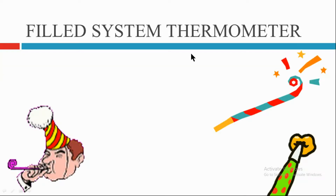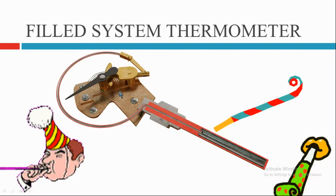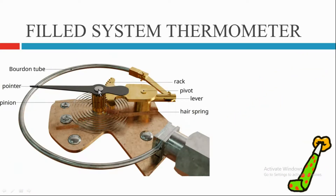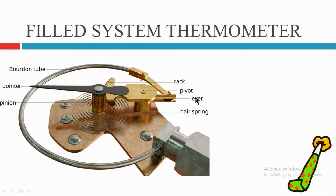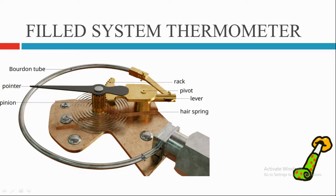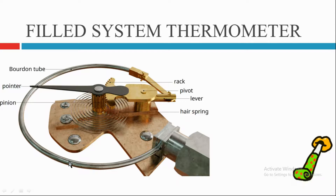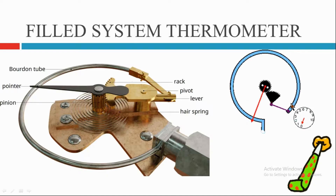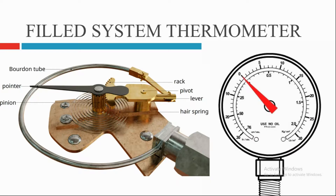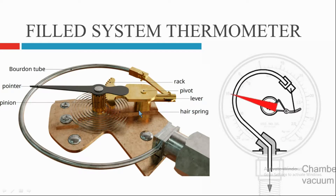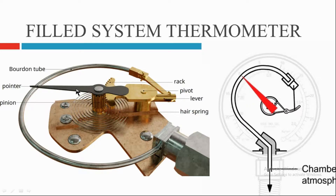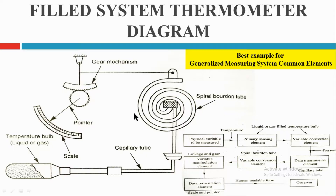Let's see the various measuring system elements in a filled system thermometer. Looking at the internal parts: there is a pointer connected with a pinion, which is in contact with a rack. The rack is actuated with the help of a lever mechanism, which gets its power from the Bourdon tube. Inside the Bourdon tube, a pressurized fluid is already filled. If the pressure increases, the Bourdon tube expands; if the pressure reduces, it shrinks — like a party whistle. A thin hairspring is also attached at the pinion gear, which retracts the pointer under no-load conditions.